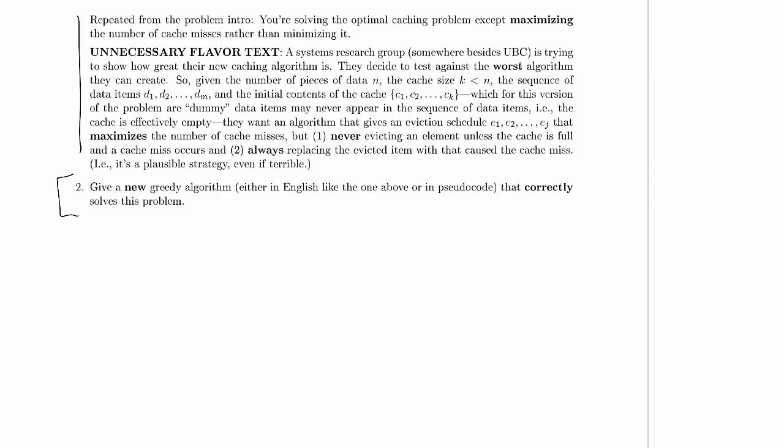And then we walked through and said, how can we maximize the number of cache misses? And what we kept doing was we would have two and three in our cache, and we'd look at our data stream, and it would say we're bringing in one right now, and then after that, we're going to access two.